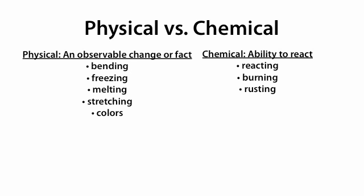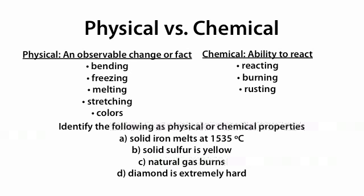An example question that we might see about this topic includes identifying the following as physical or chemical properties. So A, solid iron melts at 1,535 degrees Celsius. We've listed melting as a physical observable change. So that is under the physical properties category.